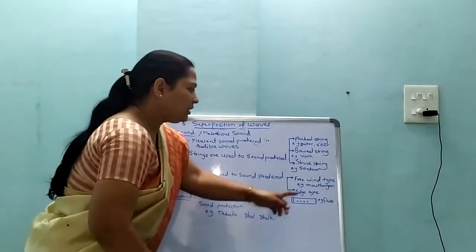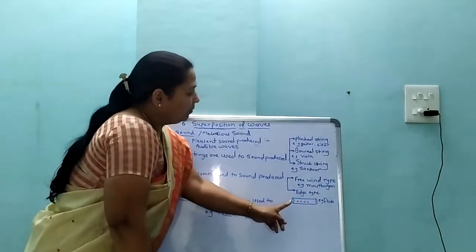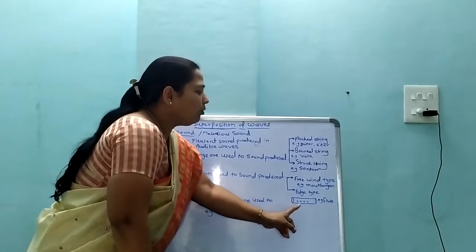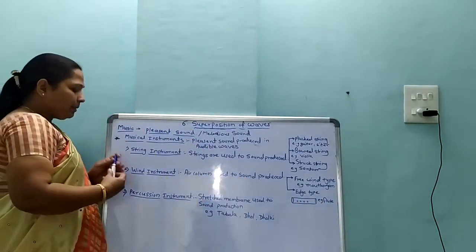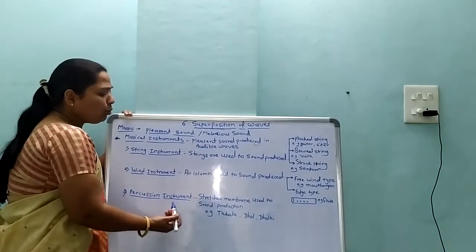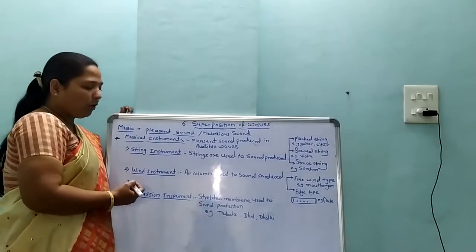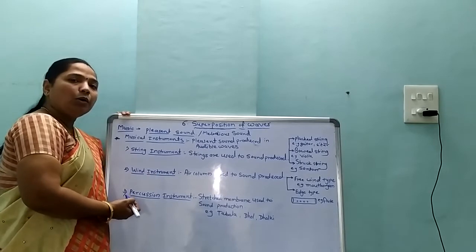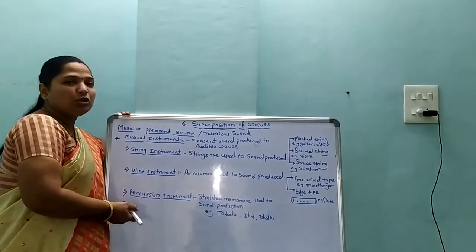The second subtype of wind instruments is the edge type, where examples include flute. The third main type of instruments are percussion instruments, which use stretched membranes for sound production. Examples of percussion instruments are tabla and dholak.